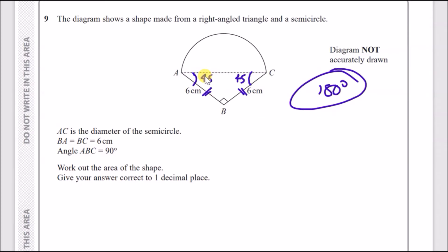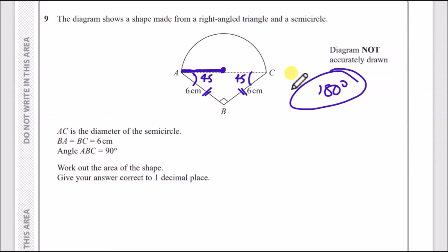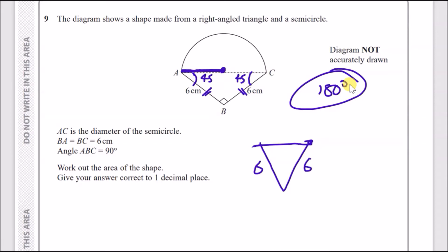We've established it's a right-angled isosceles triangle. AC is the diameter of the semicircle, so halfway across is the radius. BA equals BC, and angle ABC is 90°. Let's pull out the triangle: two sides of length 6, angles of 45°, 45°, and 90°.